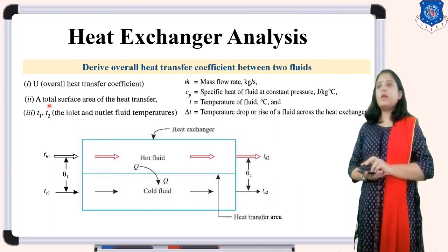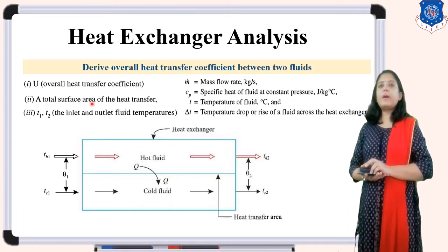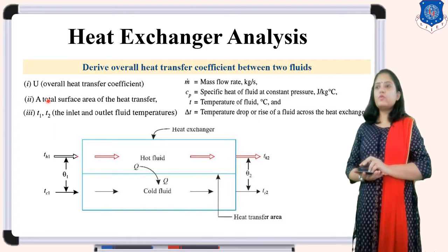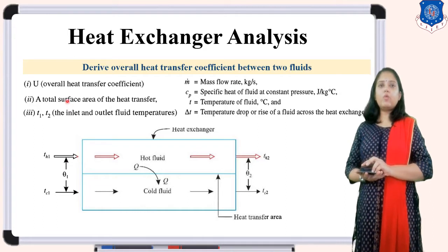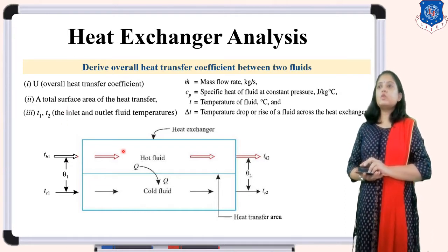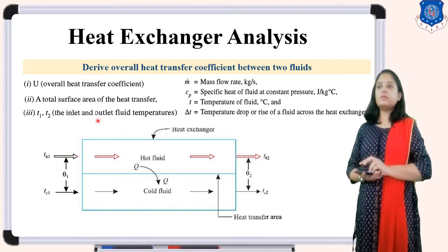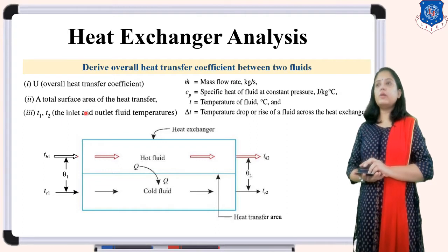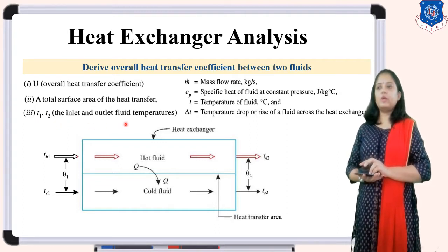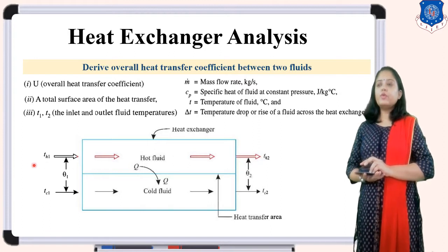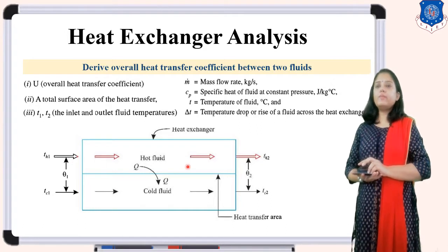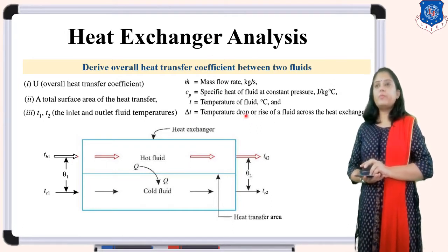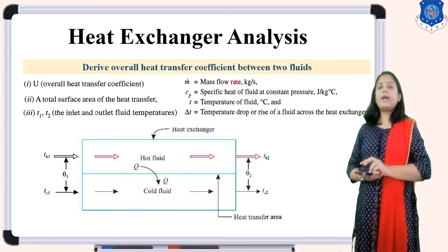The area of heat transfer is denoted by capital A. When the fluid flows inside the heat exchanger, the inlet and outlet temperatures are both different. The inlet temperature is mentioned as T1 and the outlet temperature as T2. So T1 and T2 are the inlet and outlet fluid temperatures respectively. The fluid flows from one direction to another, and the mass flow rate in kg/s is denoted by M-dot.